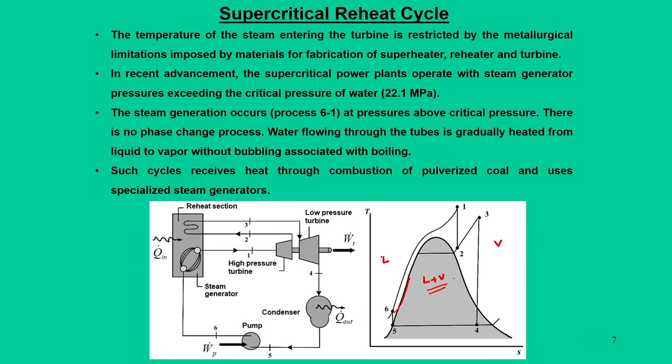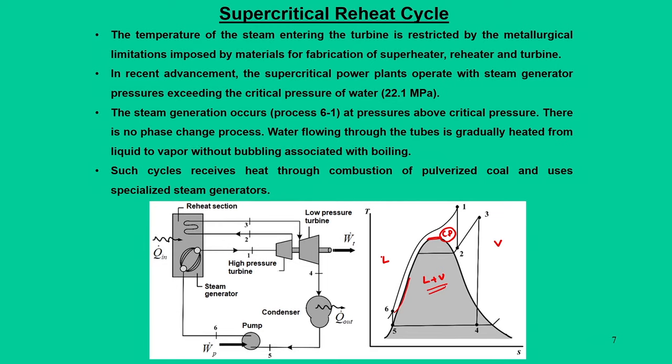What the supercritical system does is increase the pressure such that we cross the critical point, so that liquid directly goes to steam without passing through the liquid-vapor region. The steam generator is equipped in such a way that we create pressures where liquid water goes directly to steam, which means we must operate at pressures above the critical pressure.